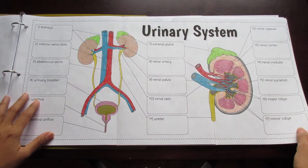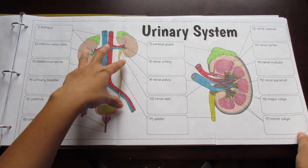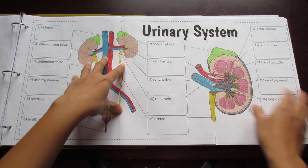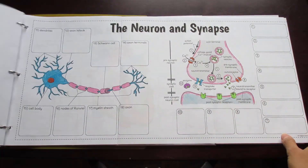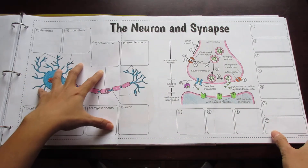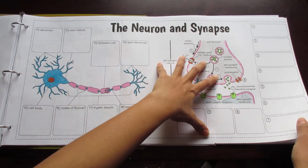Here's the urinary system with both the overview and the kidney. This is the neuron. This is the synapse.